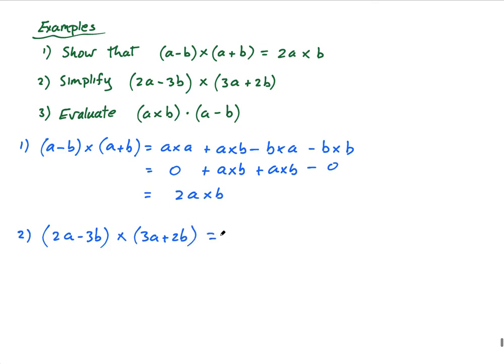This equals 6a cross a, that's going to be zero, nice, and plus, plus 4a cross b, minus 9b cross a, this is actually quite similar, minus 6b cross b.